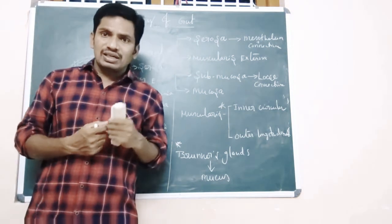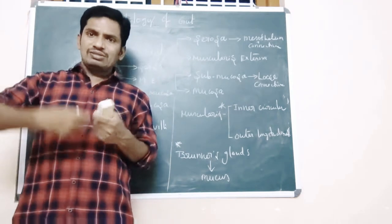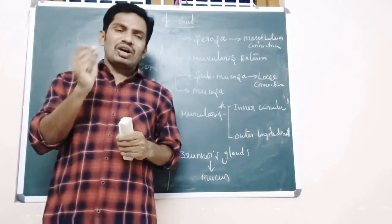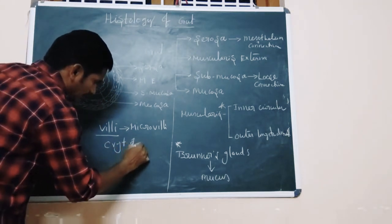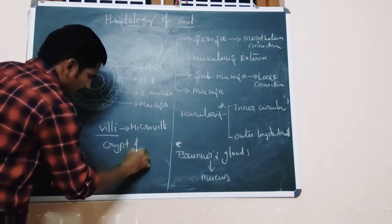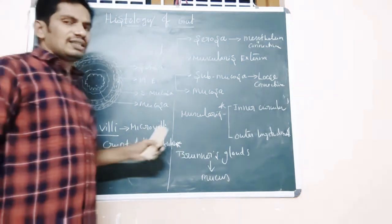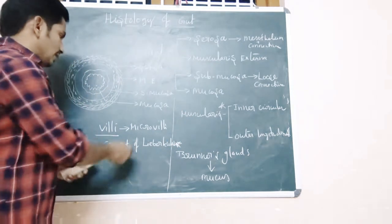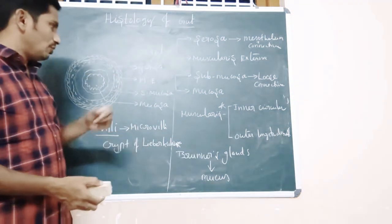The villi consist of one big duct connected to the lymphoid system, known as the lacteal, along with blood capillaries. The villi also contain the Crypts of Lieberkühn, which also secrete mucus. The lacteals and blood capillaries are present in the mucosa layer.